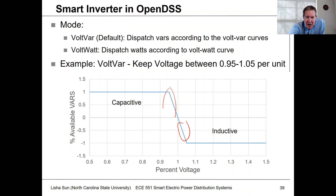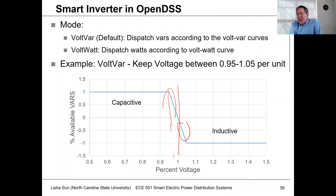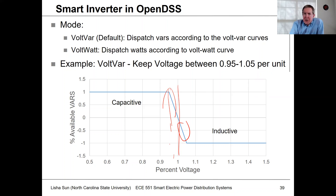Some controllers might actually have a deadband where they don't do anything at all. But for this simple example, we'll just assume we're operating linearly within this range.